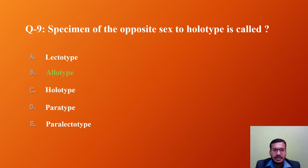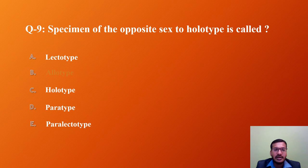Question 9: The specimen of the opposite sex to the holotype is called? A) Lectotype, B) Allotype, C) Holotype, D) Paratype, E) Paralectotype. Lectotype is designated from syntypes; allotype is the specimen of opposite sex to the holotype; holotype is the single specimen on which the description of the species is based; paratypes are specimens other than allotype and holotype; paralectotypes are syntypes other than lectotype. The answer is B — allotype.